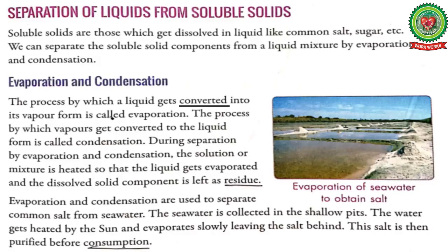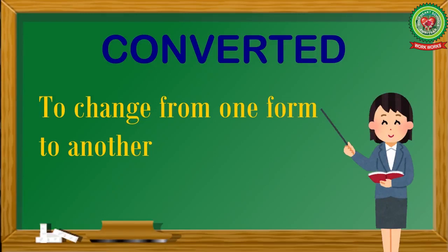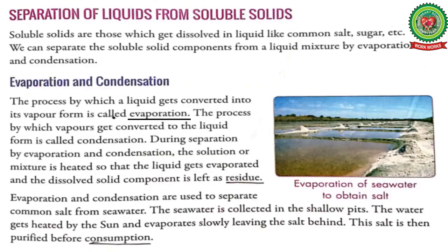Evaporation and condensation: the process by which a liquid gets converted into its vapor form is called evaporation. Students, underline the word 'converted' and write down its meaning: to change from one form to another. Mark this definition on your book.